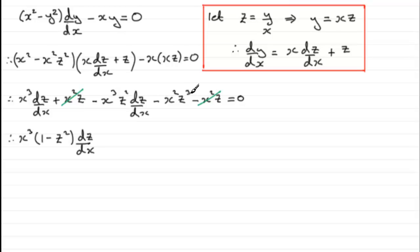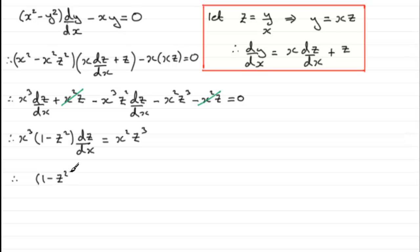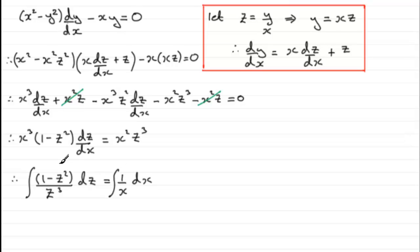Adding x²z³ to both sides gives x³(1 − z²)·dz/dx = x²z³. I can now separate the variables — dividing both sides by z³ and x³ and rearranging gives (1 − z²)/z³ dz = (1/x) dx, and I can integrate both sides.